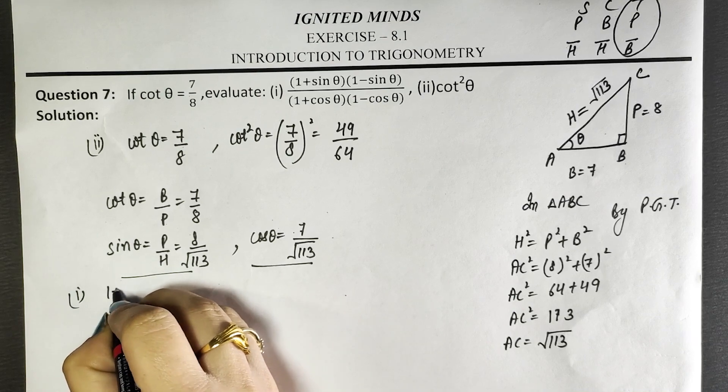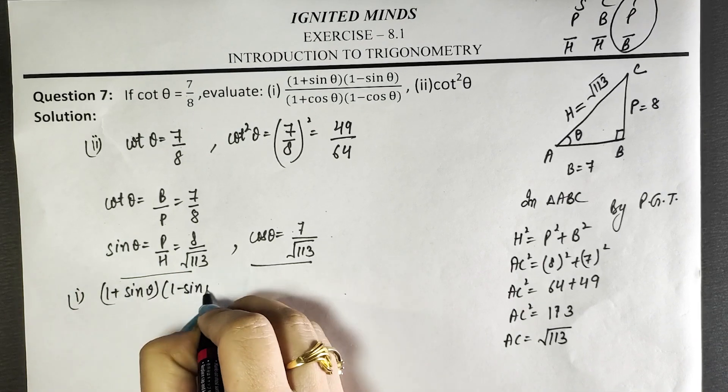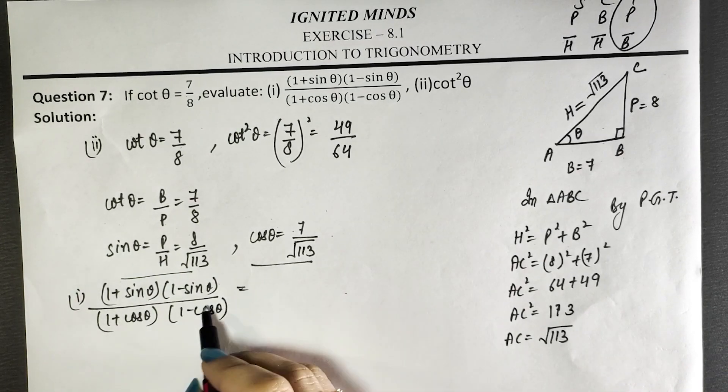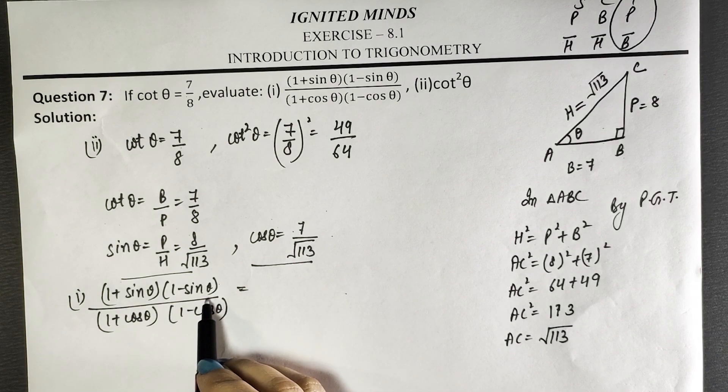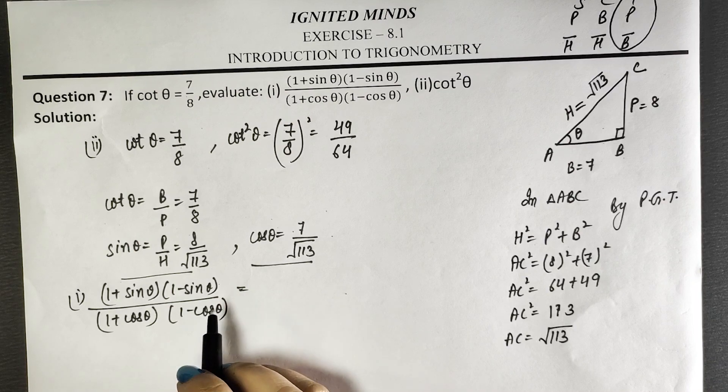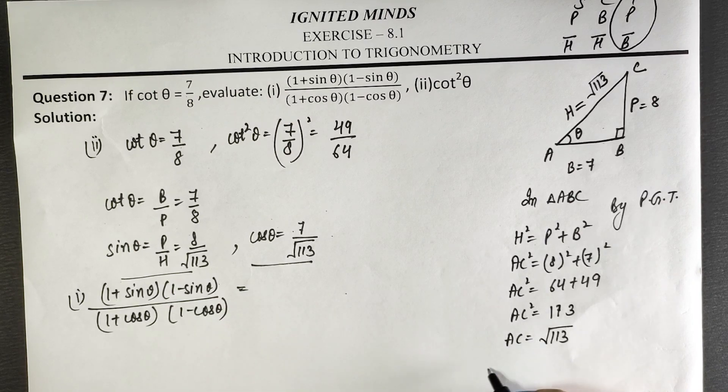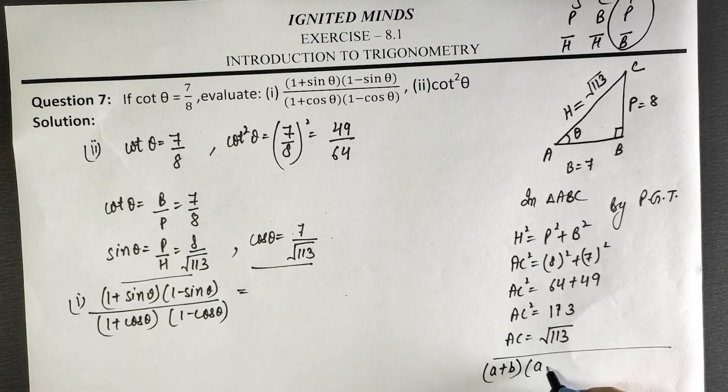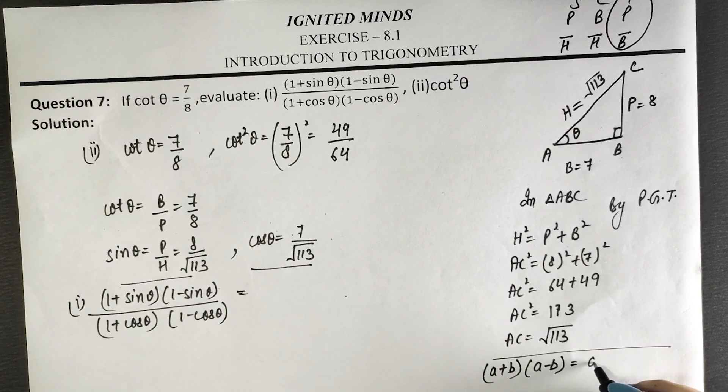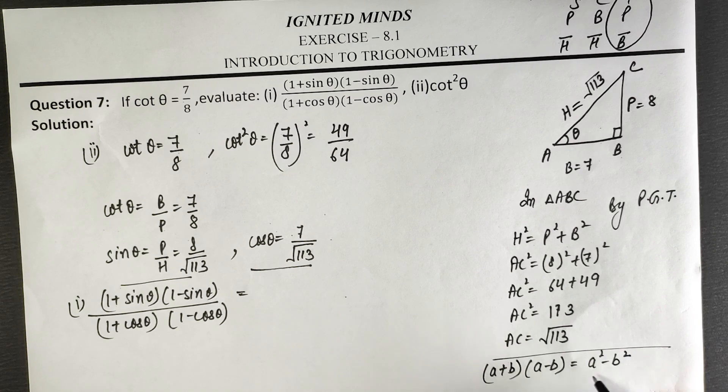1 plus sin θ into 1 minus sin θ. If you see this, you will know that one identity is (a plus b)(a minus b), that is a squared minus b squared, which I will show you on the side.